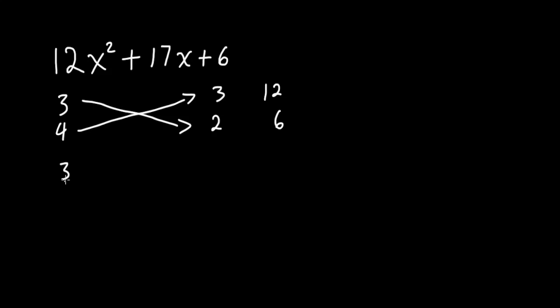We'll try 3 and 4 again, and this time I'll flip these to 2 and 3. Cross multiply: 4 times 2 is 8, and 3 times 3 is 9. When you add these together, do they add up to the middle term? Yes, they do. They add up to 17, so these are the factors.